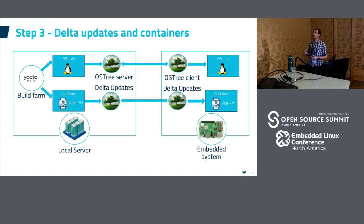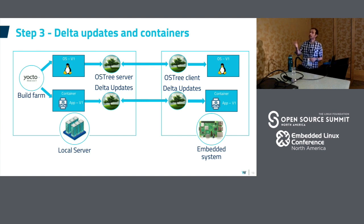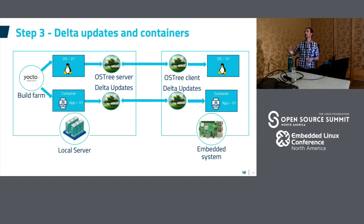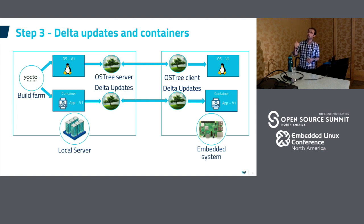Looking at the architecture: on the left we have Yocto, which builds the operating system and the containers and pushes the result to an OSTree server — in this use case running locally on your computer. On the other side, on your embedded device, you have an OSTree client that pulls the modifications, downloading only the delta updates between two versions of the software. You can then independently update the operating system or the containers.